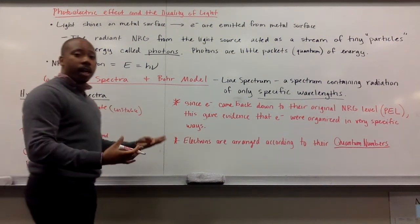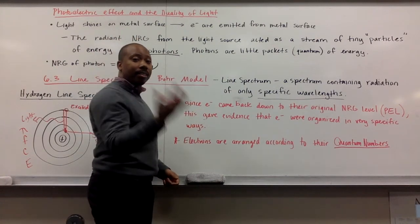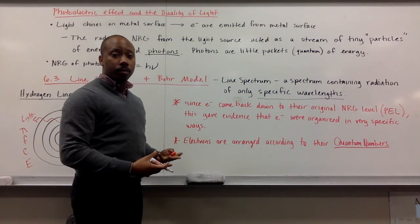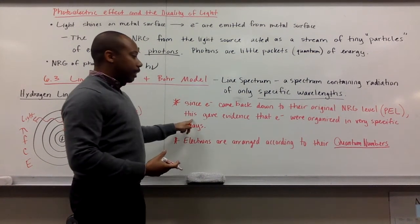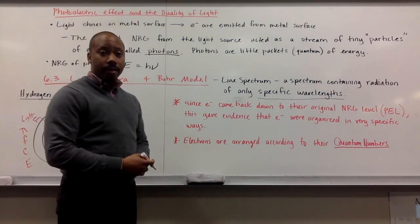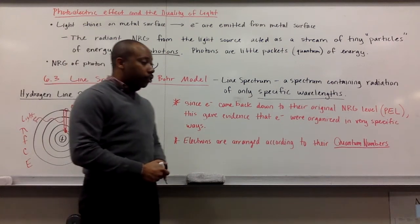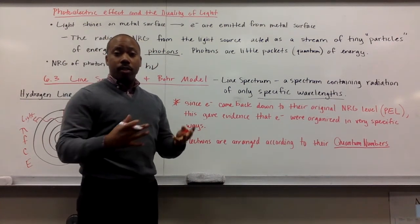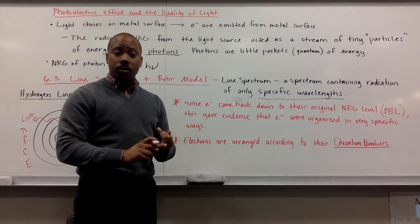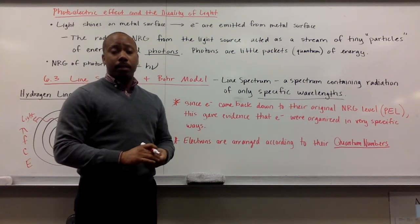That's what Niels Bohr observed. But one of his major takeaways was this: since electrons came back down to their ground state, to their original principal energy level, this gives evidence that electrons were organized in a very specific way. Electrons are arranged according to their quantum numbers, in principal energy levels, sublevels, and orbitals, and those are all overlapping in a very complex manner.